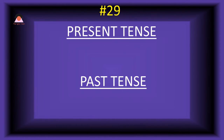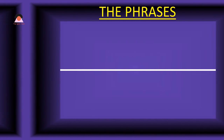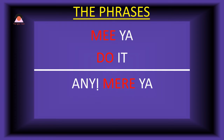Word number twenty-nine: 'me,' meaning 'do.' The past tense of me is 'mere,' meaning 'did.' Present tense phrase: 'me-eya' — do it. Past tense: 'ani-mere-ya' — we did it.